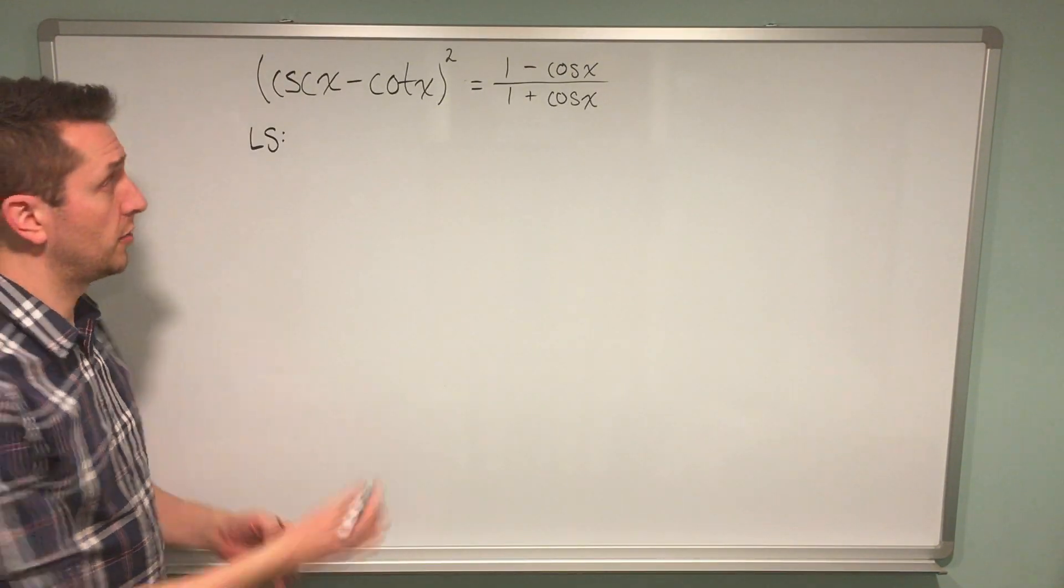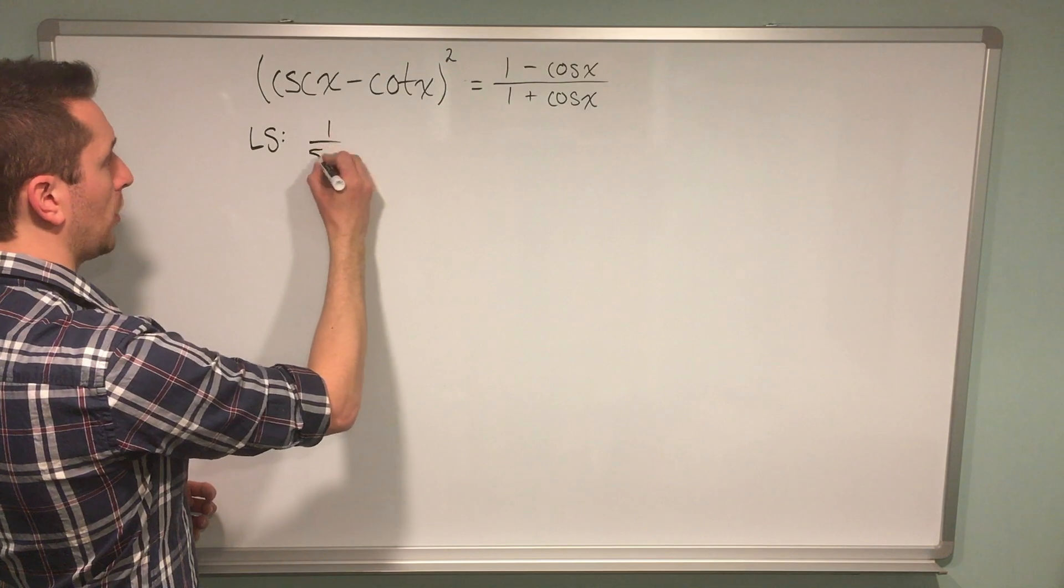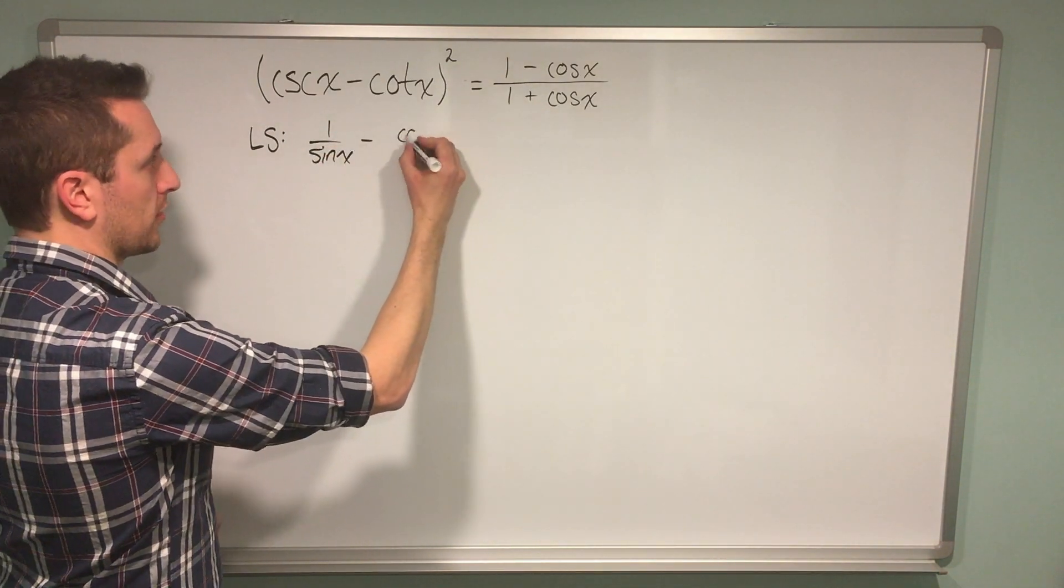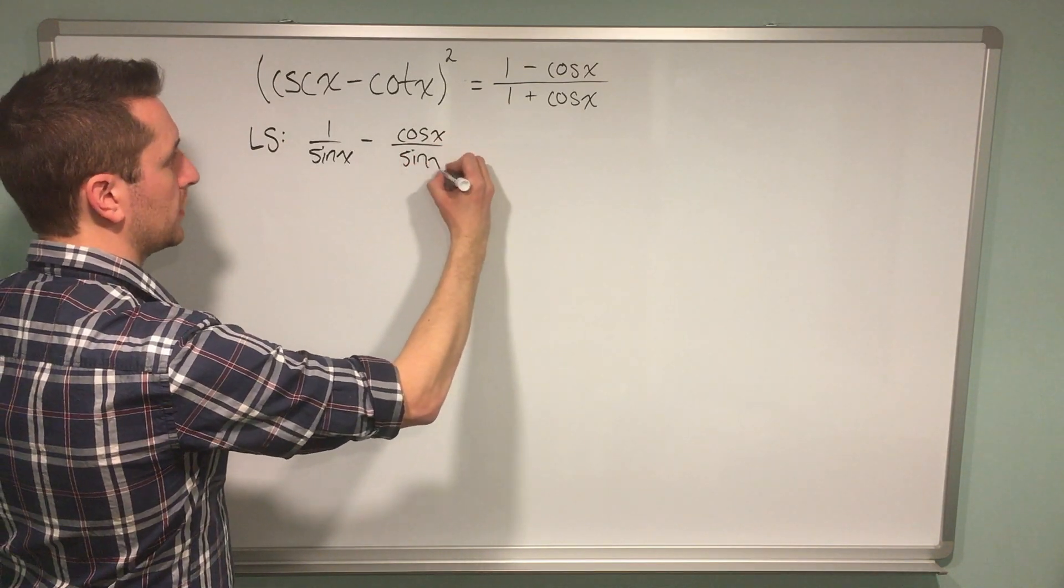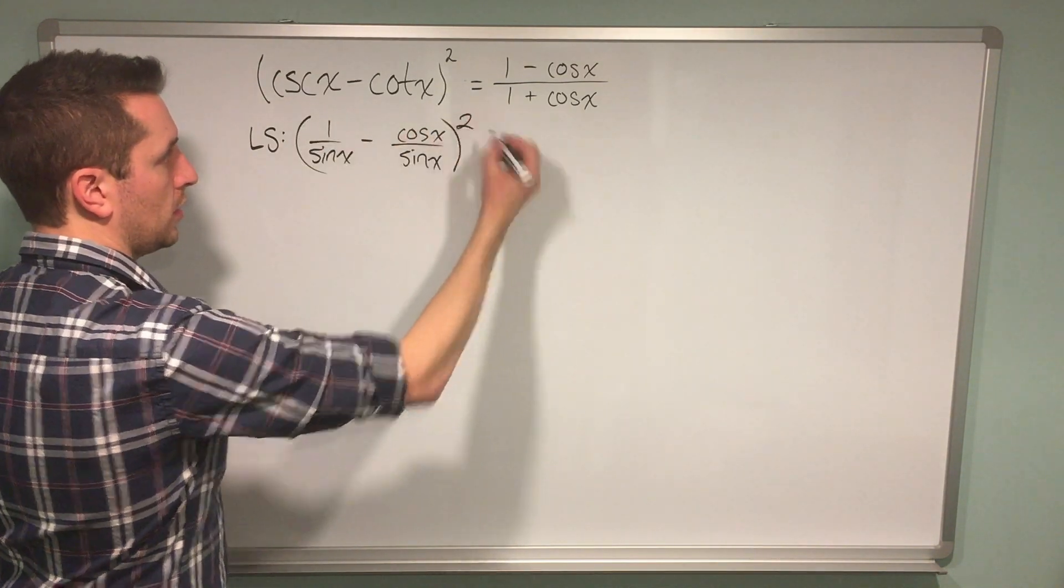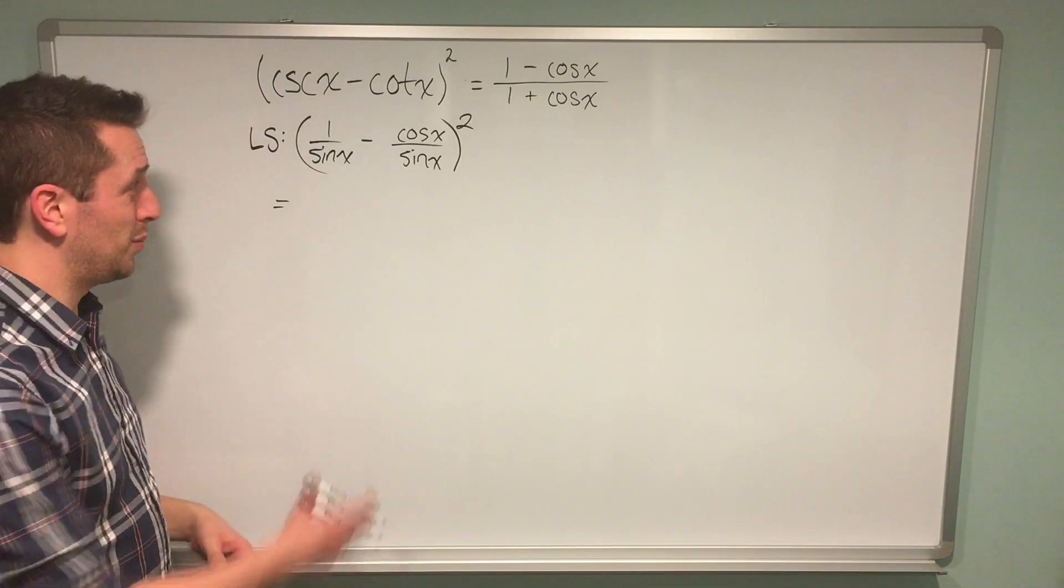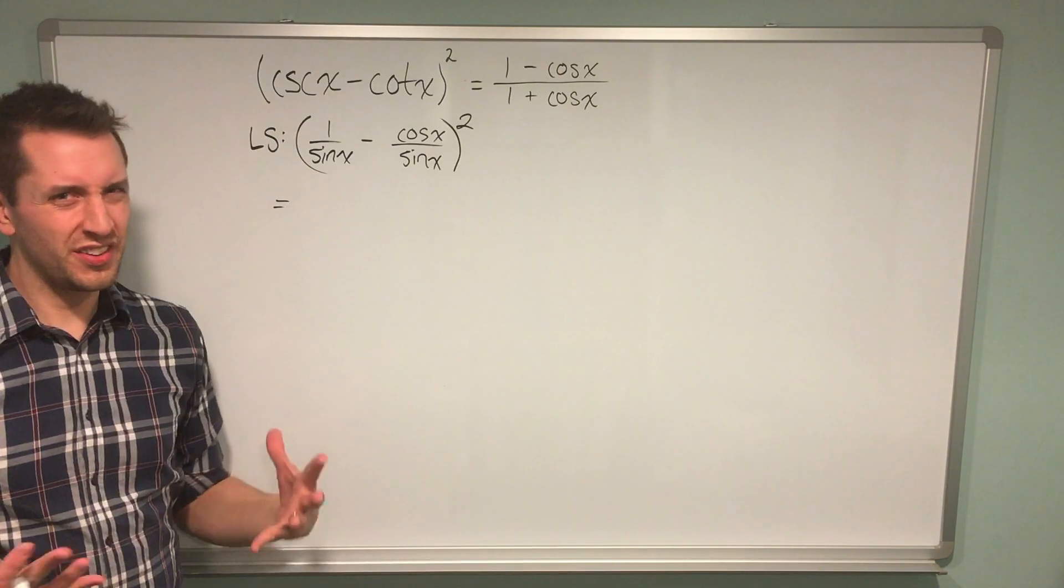I can apply reciprocal trig identities to write cosecant as 1 over sine of x, and I'm subtracting cotangent, which is cosine over sine. That's just one of those reciprocal identities you likely know. So what I have here is subtraction of two fractions, which is usually scary, but because I have a common denominator, this isn't that complex.